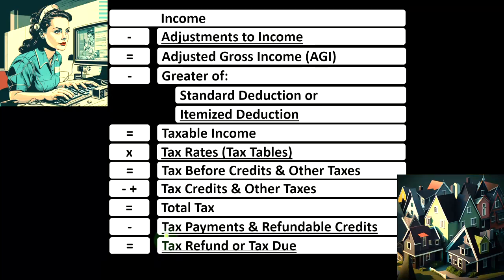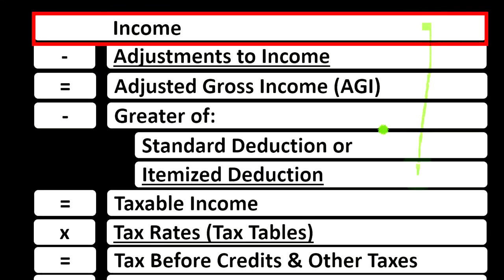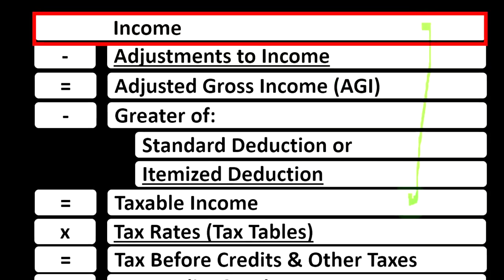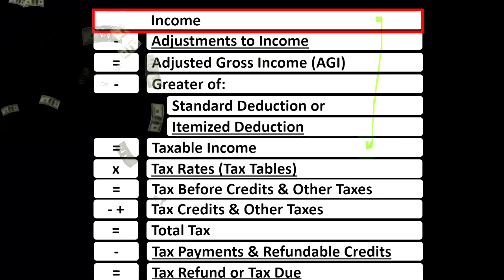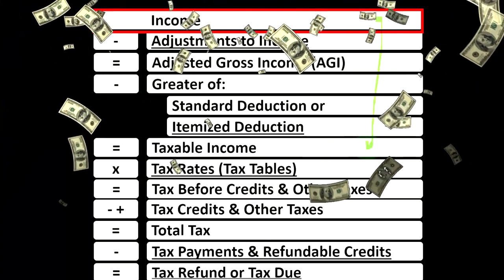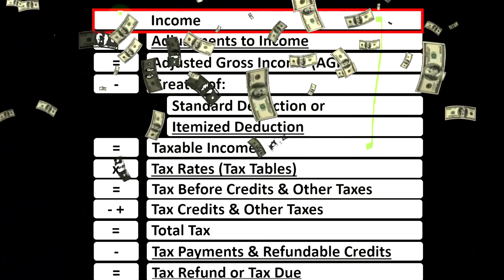Looking at the Income Tax Formula, we're focused on Line 1 Income. The first half of the Income Tax Formula is, in essence, an income statement — although just an outline — with other forms and schedules flowing into these line items. One of those is the Schedule E, which is, in essence, an income statement in and of itself, with rental income minus rental expenses, and the net rental income flowing into Line 1 Income of our Income Tax Formula.